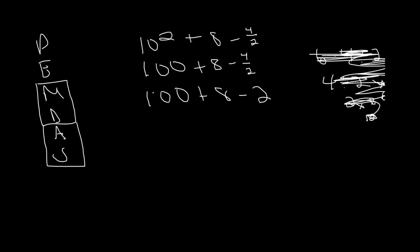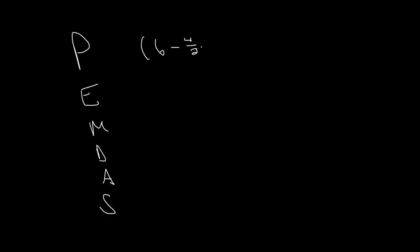This is what you call the order of operations, which basically gives you an order to complete any long, complicated expression. Let's say we had another one: 6 minus 4 halves times 2 squared, plus 6 minus 4 times 2 divided by 2, plus a parenthesis with 1 plus 1.